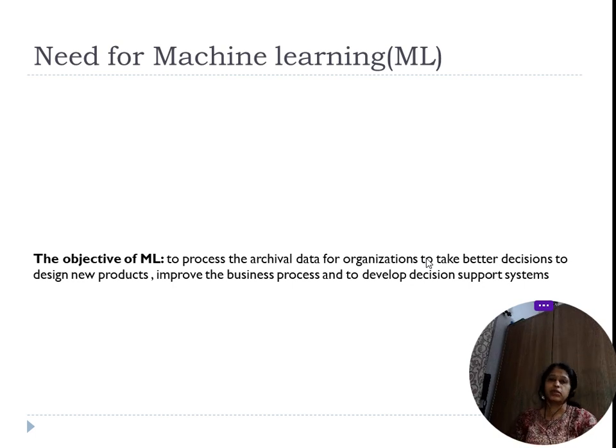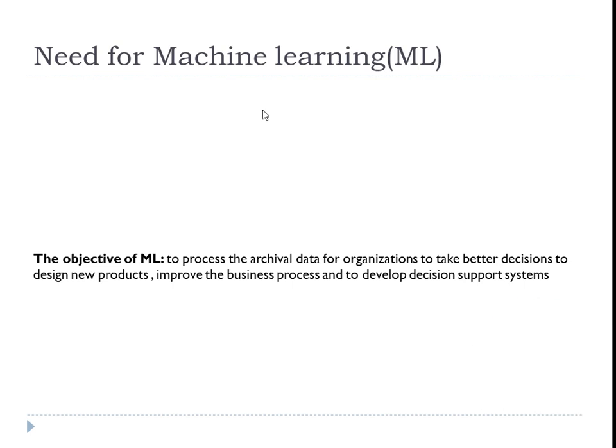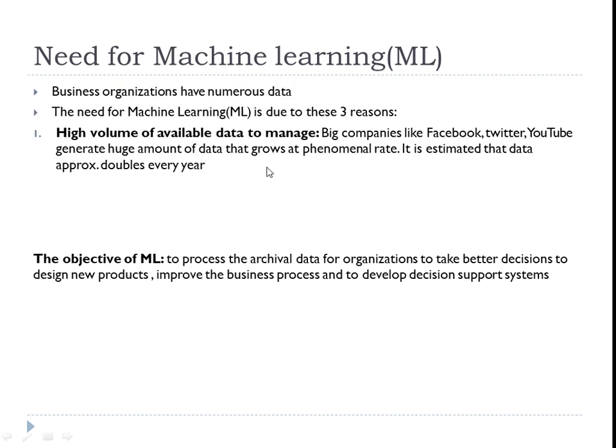Today's session I will mainly discuss about the need for machine learning and what is the knowledge pyramid. So basically, the need for machine learning arises because various business organizations today have numerous data. One of the three primary reasons is the high volume of available data. Everyone in the world is generating data, and especially big companies like Facebook, Twitter, and YouTube generate huge amounts of data at a phenomenal rate — it is even estimated that data doubles every year.